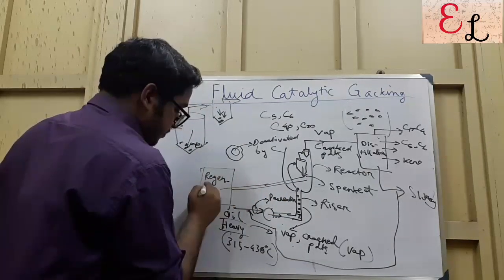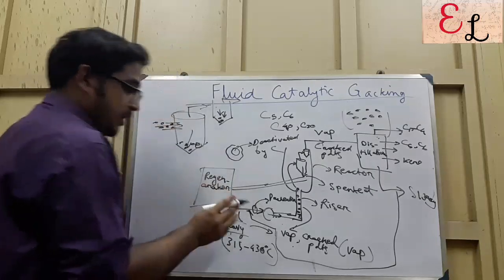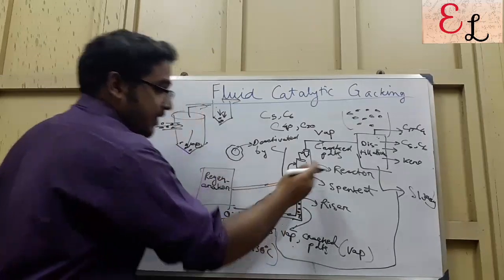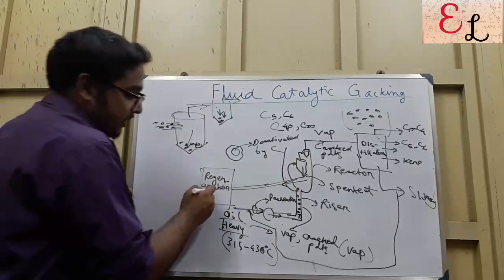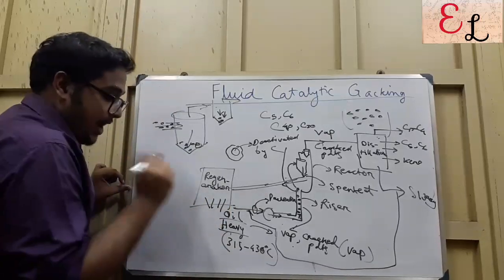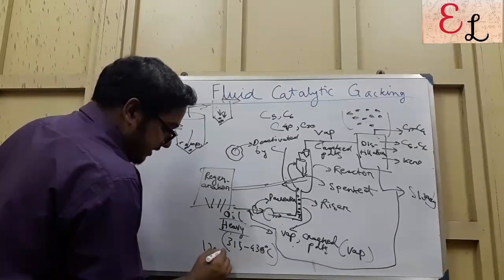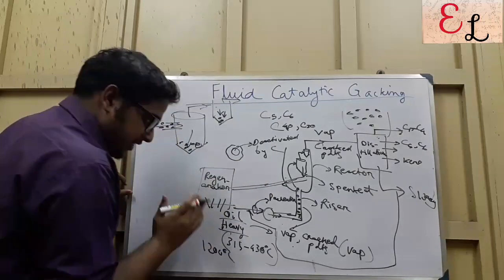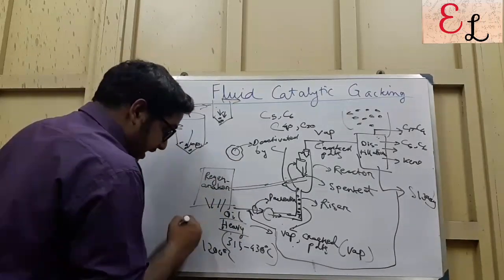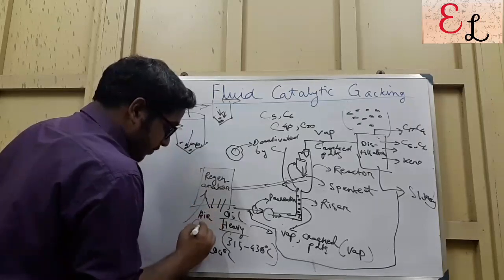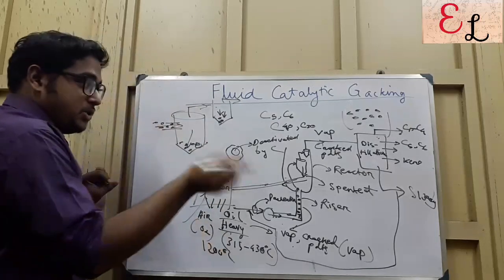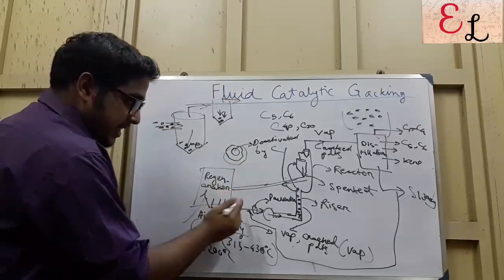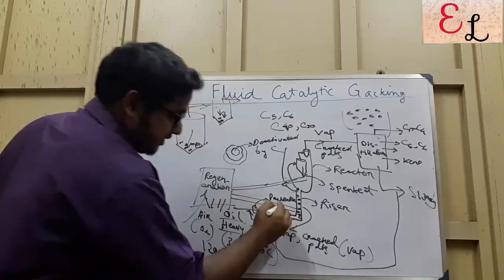The spent catalyst is taken to a regenerator. Steam is supplied that carries the catalyst forward to the regenerator. In the regenerator, a high temperature of around 1200 to 1300 degrees Celsius is maintained — perfect conditions for combustion. Air, meaning oxygen, is sent in, which burns off the carbon surrounding the catalyst, reactivating the catalyst and hence transferring it back to the riser.